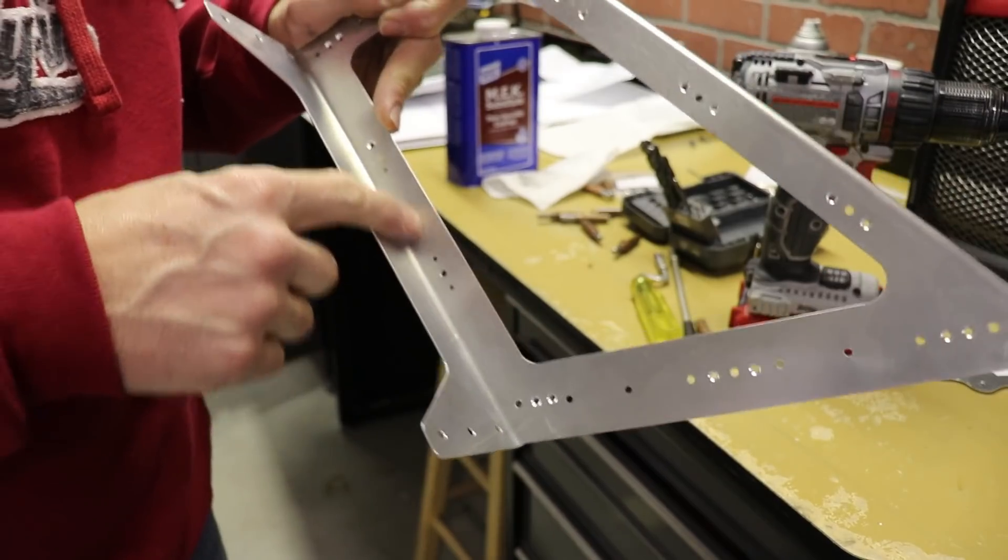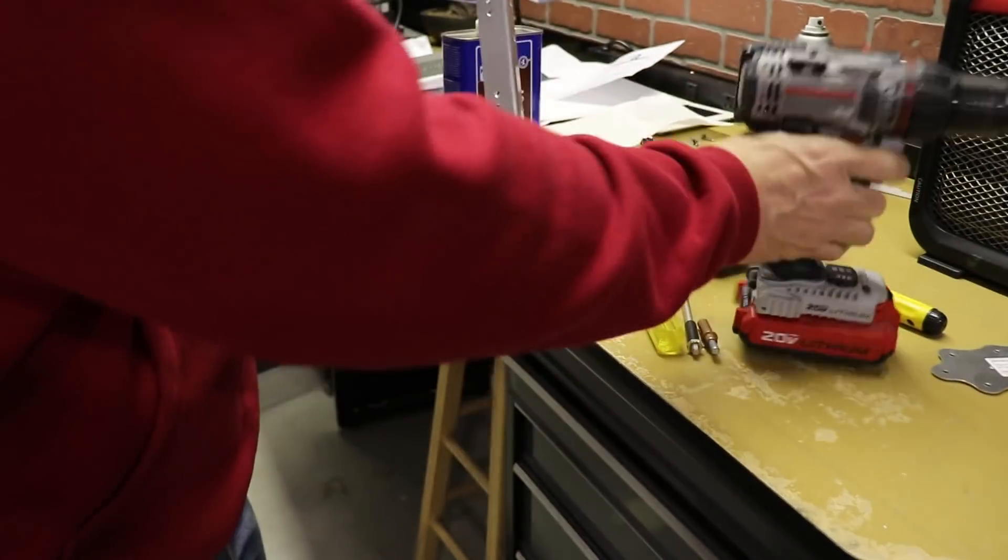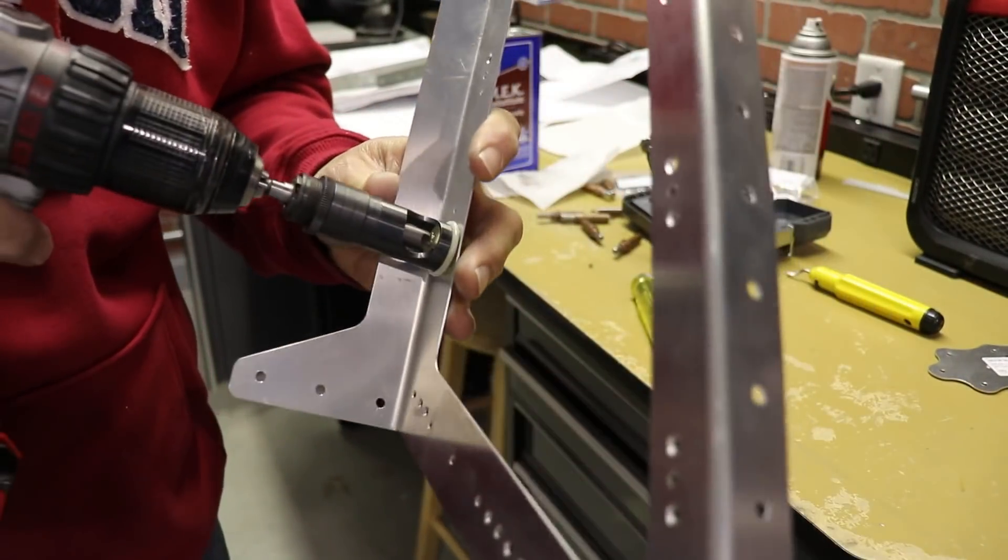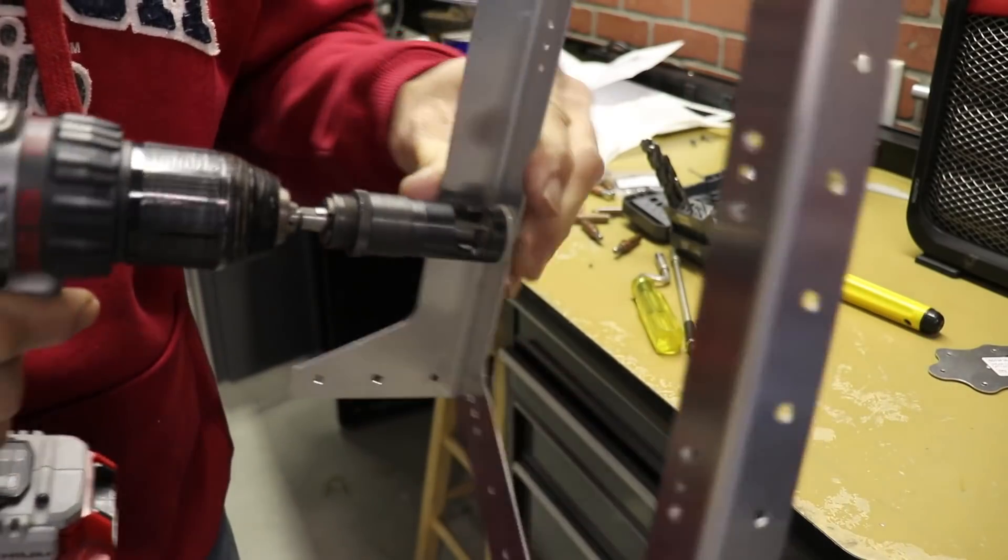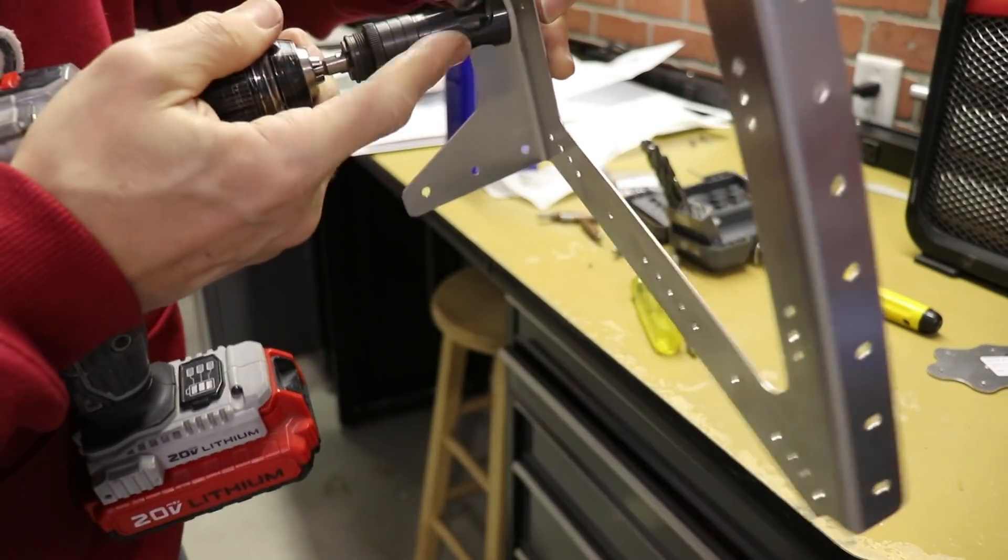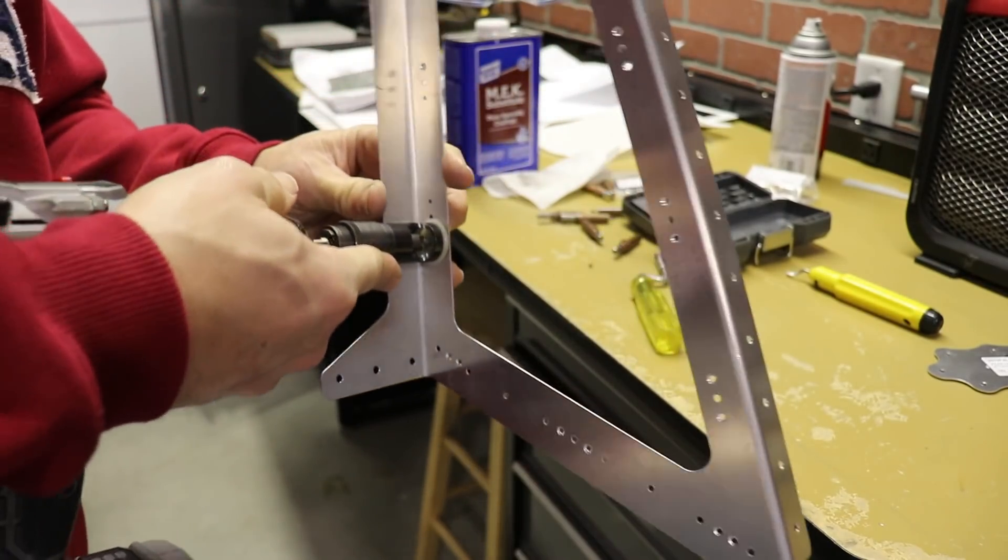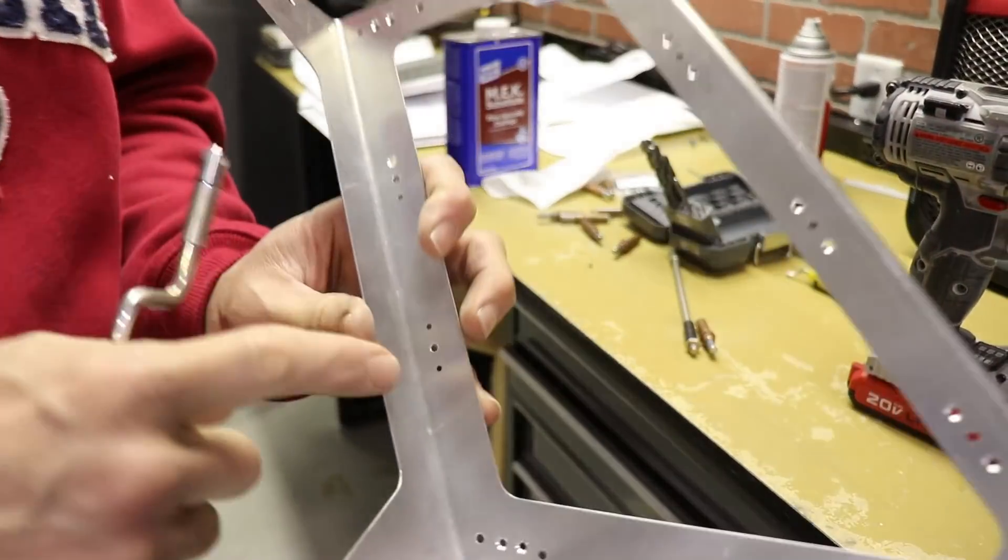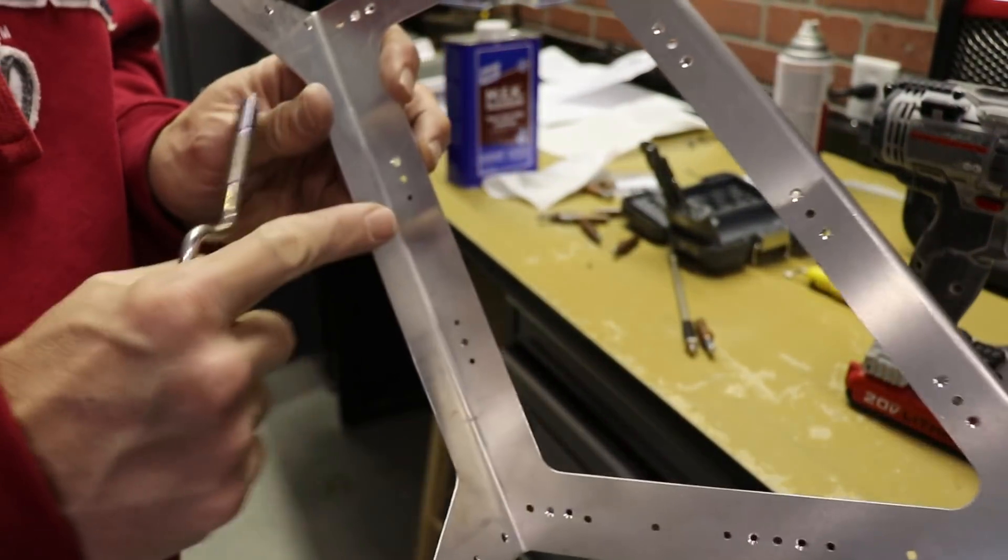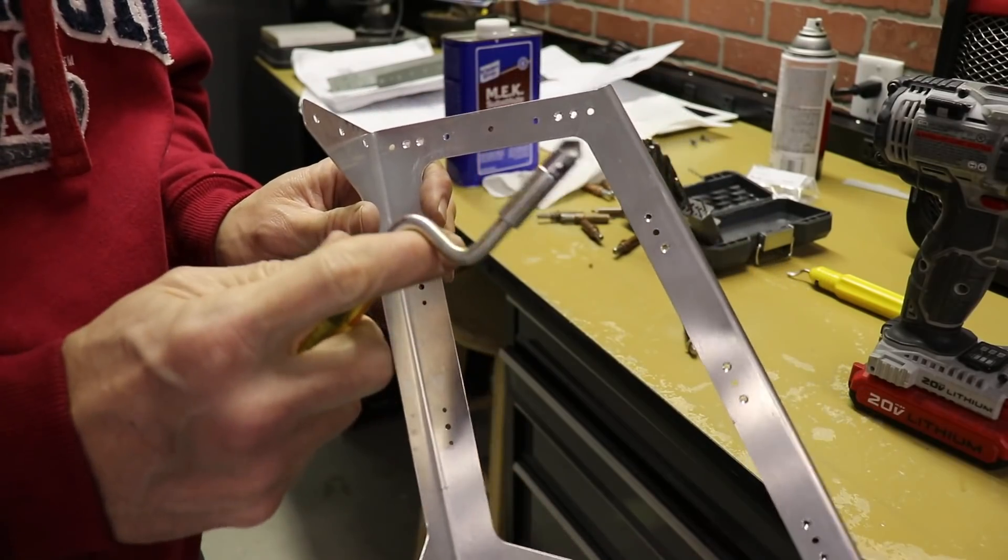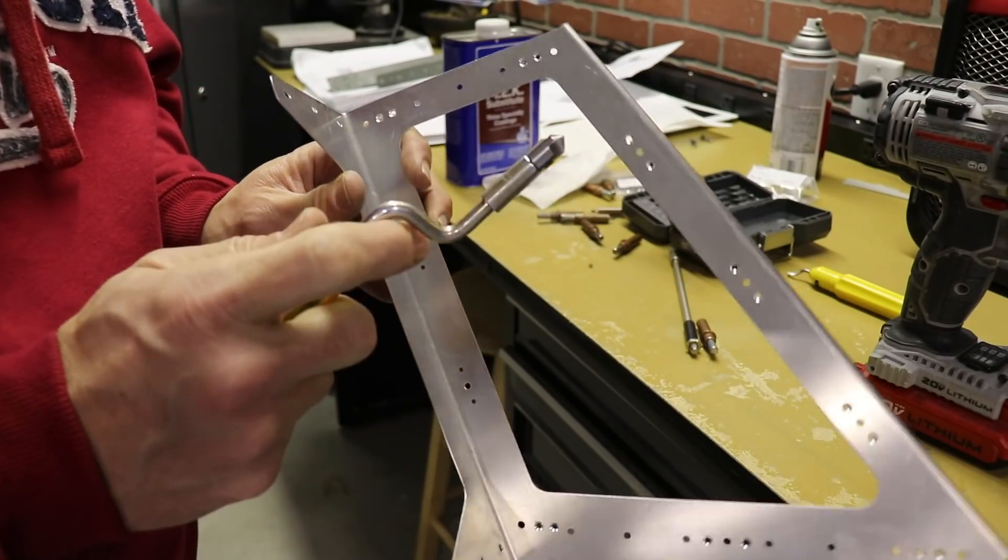On these holes on the bottom, I noticed that I can't use this because the metal part here hits the bottom and I can't get it into the hole. It's not centered on the hole. So for these holes on the bottom here, I'm just countersinking them with my deburring tool.